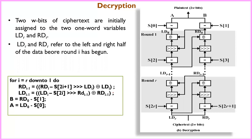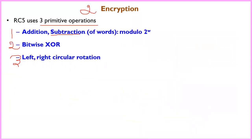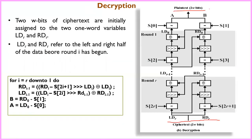The decryption process is similar — the same operations are applied in reverse. It uses the left half and right half registers. In decryption, XOR and circular shift are used, but addition is replaced by subtraction. The subtraction operation carries over to give the plaintext. The reverse operations — minus, XOR, and circular shift — representing permutation, substitution, and subtraction — are used to decrypt back to plaintext.